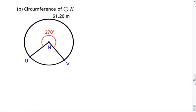Then in part B, you're going to find the circumference of circle N, where the large arc UV is 61.26 meters and the angle is 270 degrees.